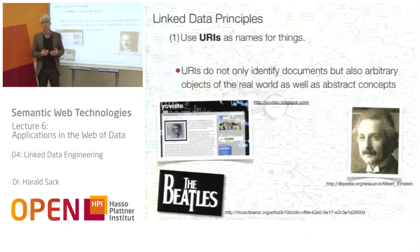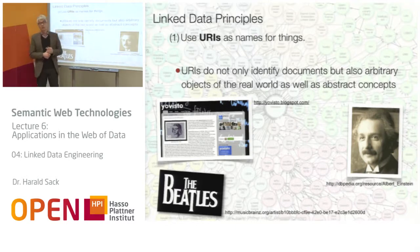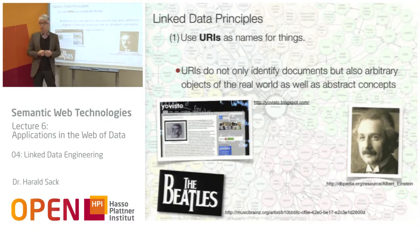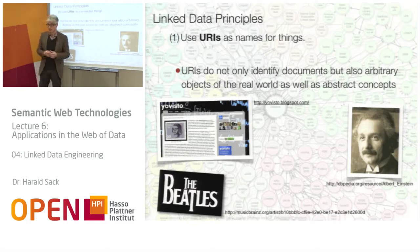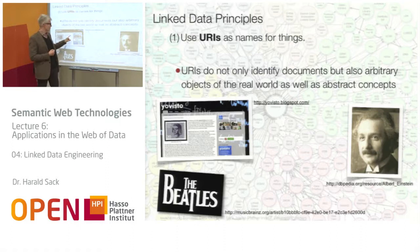Let's go into these principles in detail. The first principle is quite clear: we use URIs as names for things. We identify things on the web with names. For example, I can talk about the content of our YoVisto blog on the history of science using its address, talk about Albert Einstein using his identifier in DBpedia, or talk about the Beatles using their identifier in the MusicBrainz database. These are URIs that identify information resources on the web about things of the real world.